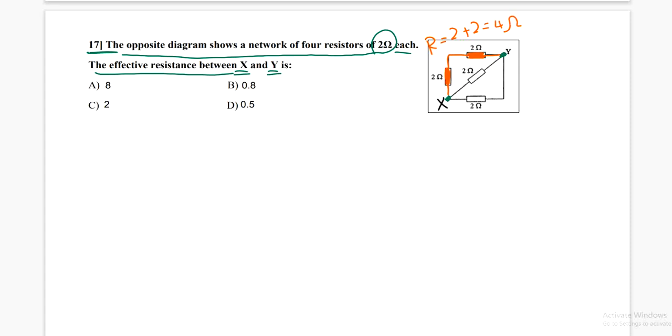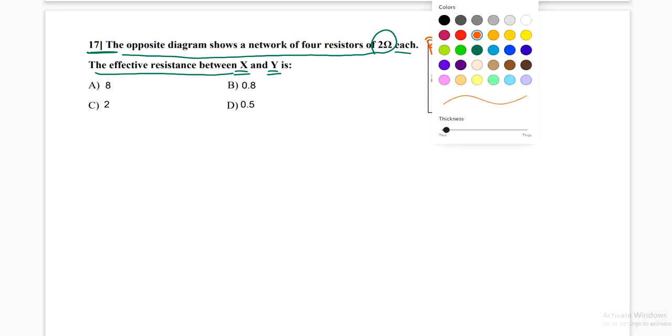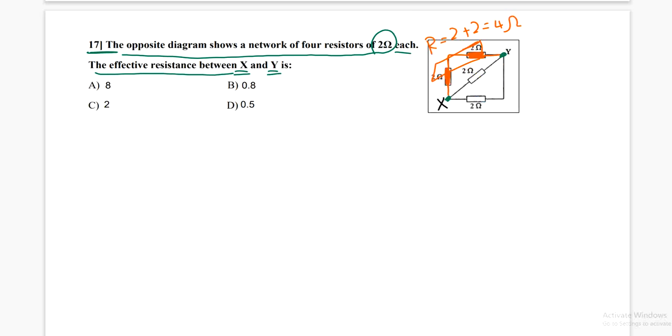Now, this four ohms with this and this are connected in parallel because each one of them is on its own line or its own wire.